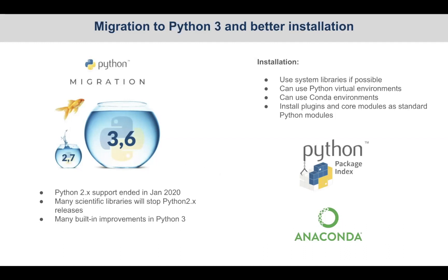At the same time, we addressed different things like making installation more standard. Now it's possible to install Scipion with an existing Python in the system using virtual environments, or we can also use Conda. All plugins can be installed in a more natural Python ecosystem way — you can use pip or Conda. This is more standardized now, and I think it will improve the interaction with other tools like scientific software, NumPy, SciPy, and especially the rapidly developing artificial intelligence libraries.